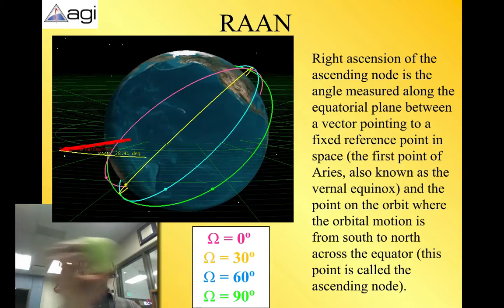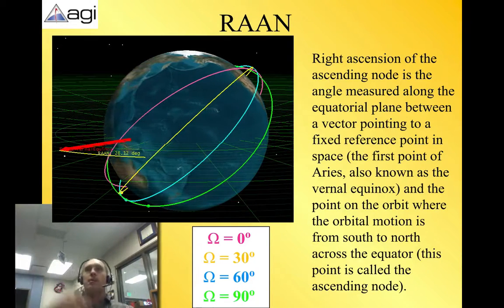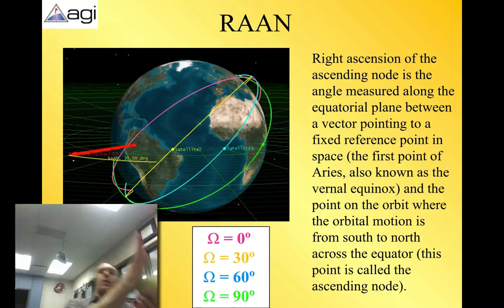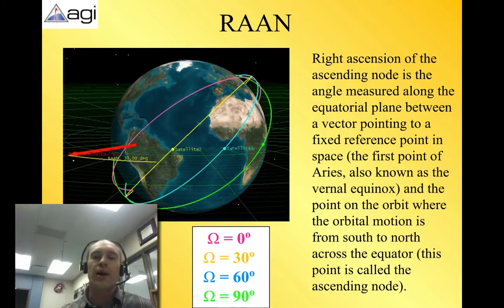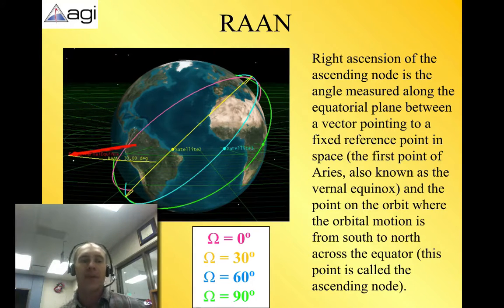Now, I know the Earth moves around the Sun, and so you're saying, well, that point in space is going to be different depending on where we are around the Sun, but it's so far away that that point, that reference point is only going to give you fractions of a decimal away when you're calculating right ascension of the ascending node.